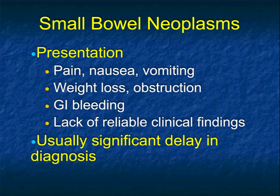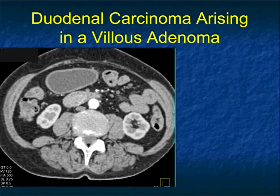People always make the point that from initial presentation to diagnosis with small bowel tumors, it's often 6 to 18 months because symptoms are not very specific. Think about your own CT practice — how often do you get a requisition that says 'rule out small bowel tumor'? It's not very frequent.